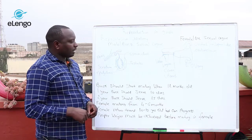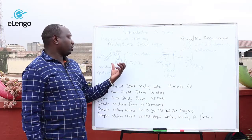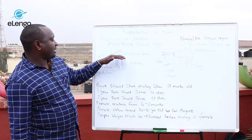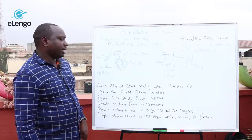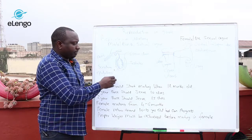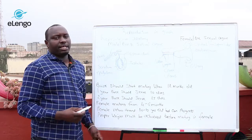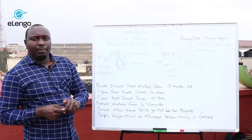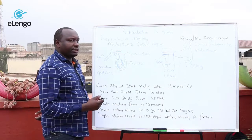If you look at the location of the testicles of a buck, you will realize it is strategically positioned in a way for a certain adaptation. In our case, we have the scrotum, which helps in regulating the temperatures of the testicles. Remember, it is in the testicles that we have what we call spermatogenesis.